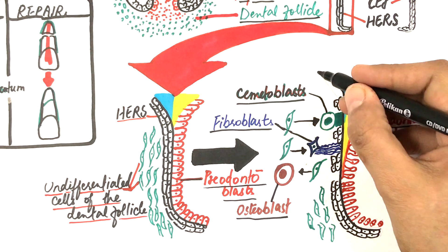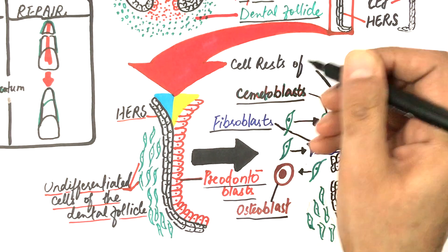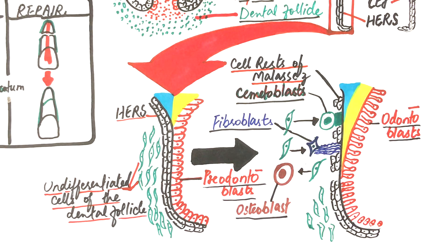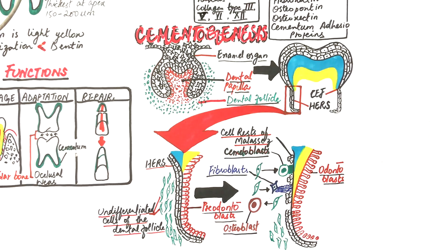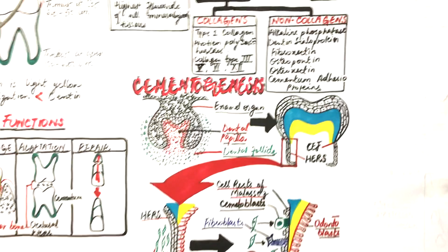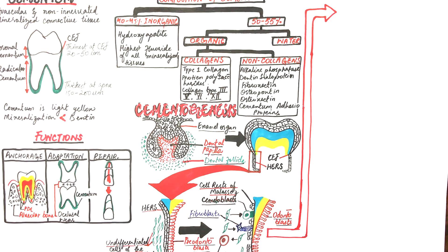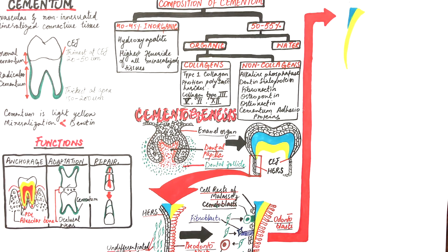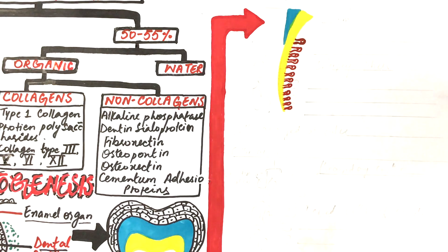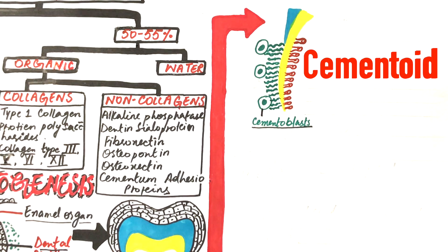Some cells of Hertwig's epithelial root sheath persist in the PDL space and are called cell rests of Malassez. These epithelial cell rests have the potential to differentiate into any type of cell, or they may remain as cell rests of Malassez in the PDL and later become the source of odontogenic cysts. Among all these cells, our focus is the cementoblasts.